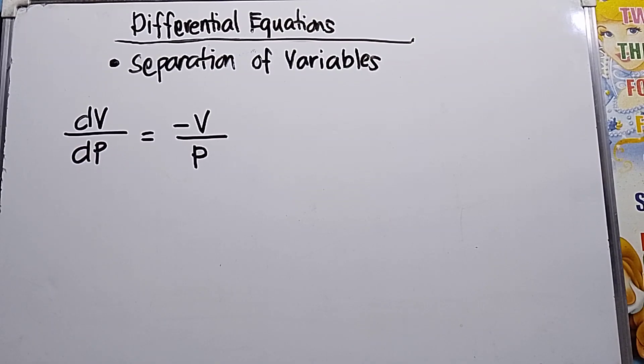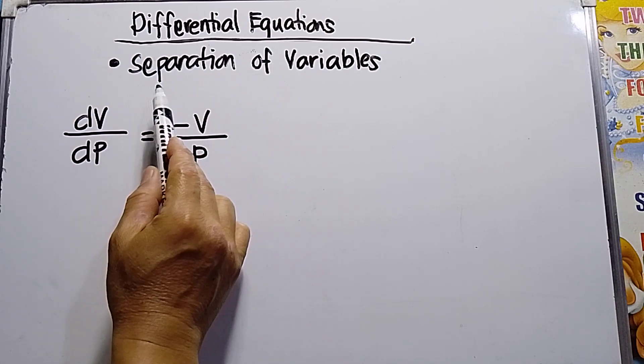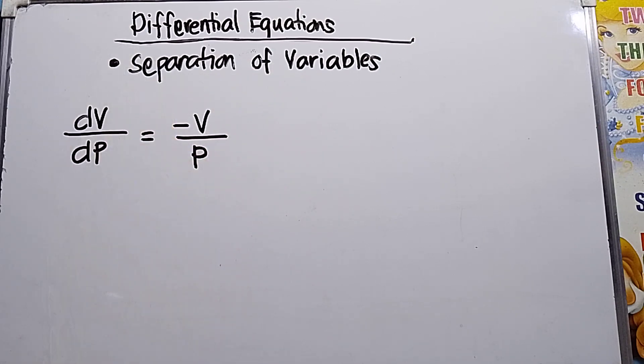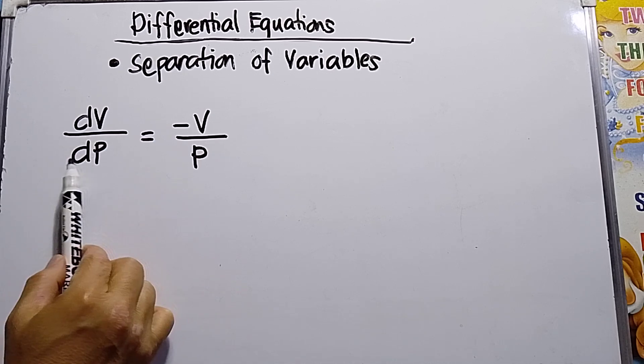Hello to my viewers, my topic today is about separation of variables. This topic is under differential equations and this math is intended for students who are majoring in mathematics and engineering students. So I have here dV over dP is equal to minus V over P.